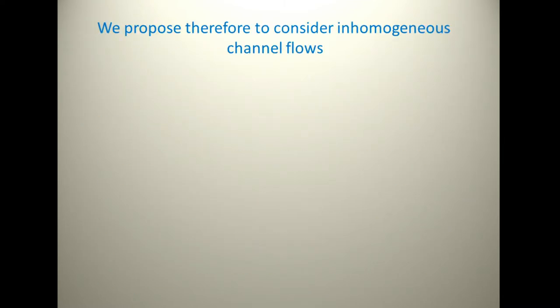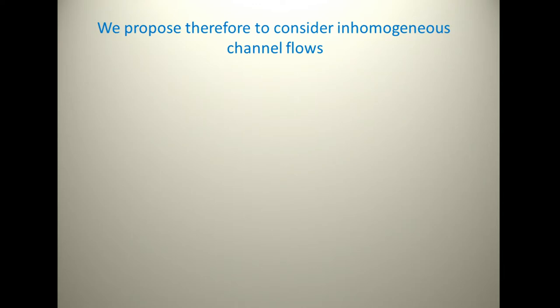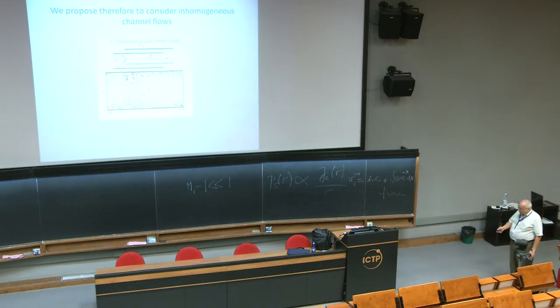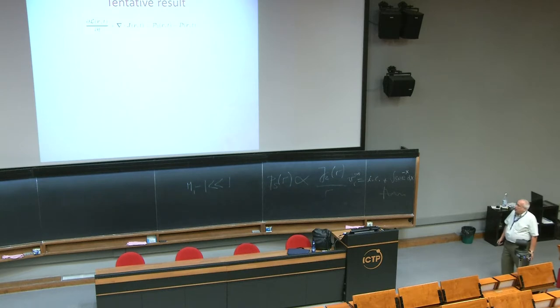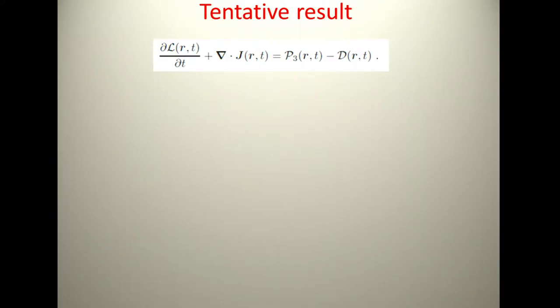So we had the idea, let's not do it in a homogeneous case, let's do it in a channel. About three years ago we started to propose let's consider inhomogeneous channel flows. Maybe there the difference is going to be more clear. And indeed it's much clearer. You choose a profile for the difference between the normal and the super velocity. Then you solve for the vortex lines using vortex methods.